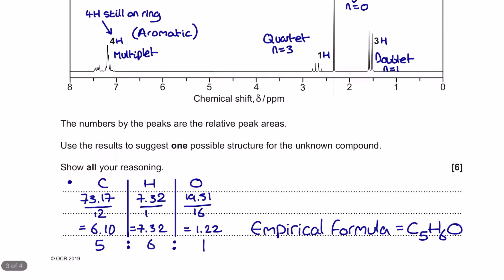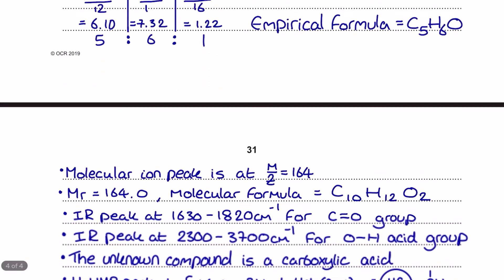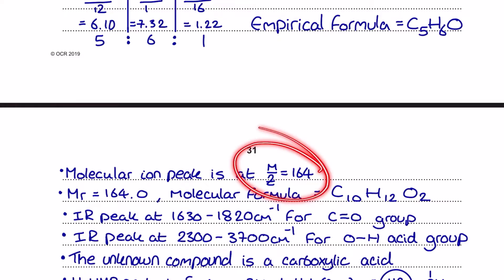The instruction of the question here for us says the numbers by the peaks are the relative peak areas, I've been over that. Use the results to suggest one possible structure and I'm telling you now what that means is there's more than one answer. You need to show all of your reasoning which means use all the data or you won't get all the marks. I start off very plainly here as you can see. I've used this percentage composition by mass data to get the empirical formula of C5H6O. And straight away we've got a teensy problem with this because the molecular ion peak is 164 and this doesn't add up to 164. Instead my molecular formula therefore ends up being a full multiple of this empirical formula. We just double absolutely anything in here by two and it takes me to the molecular formula of C10H12O2.